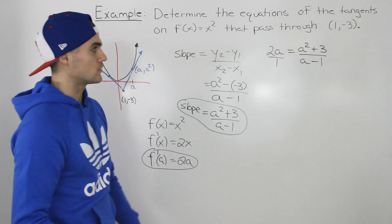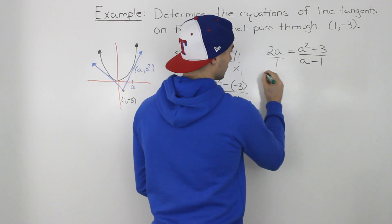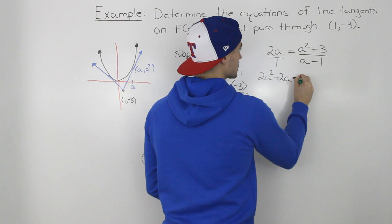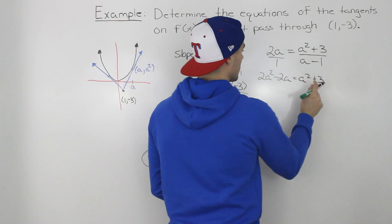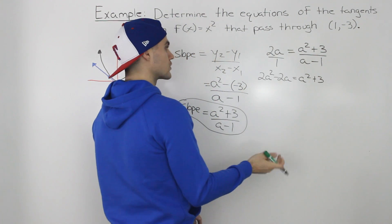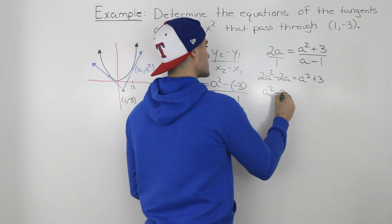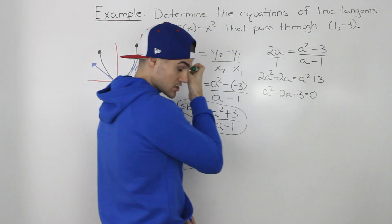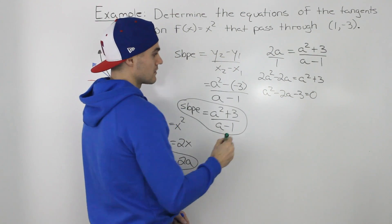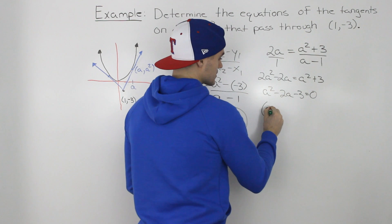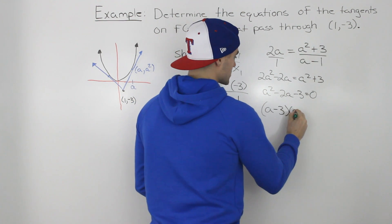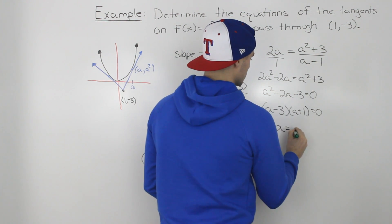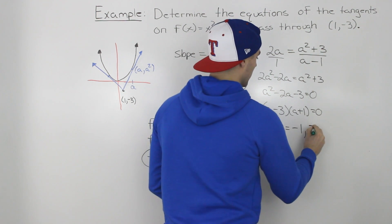Since those are equal, we can now solve for a. When we cross multiply, we have 2a² - 2a = a² + 3. Bringing everything to the left side, we get a² - 2a - 3 = 0. This is just a quadratic equation, and it factors smoothly into (a - 3)(a + 1) = 0. So a is equal to negative 1 and positive 3.